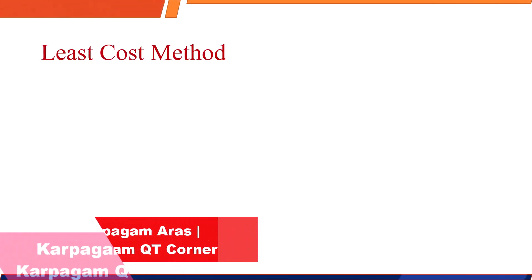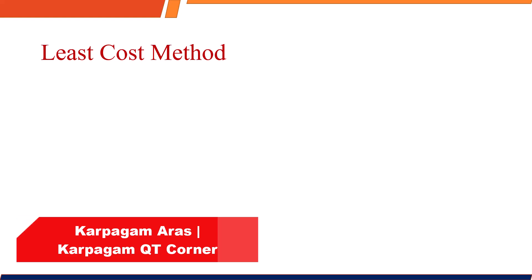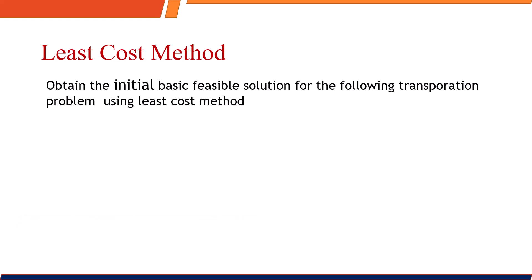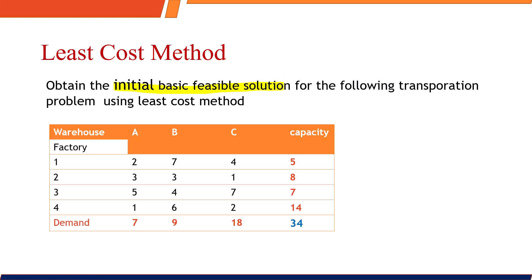Welcome back. In this video I'm going to show you how to solve a transportation problem using the Least Cost Method, or LCM method. We are given a numerical and asked to find the initial basic feasible solution. In any transportation problem we are given sources — here in terms of factories — and destinations in terms of warehouses. The destination has demand, the source has supply capacity, and at each intersection point we have the cost of transporting a product.